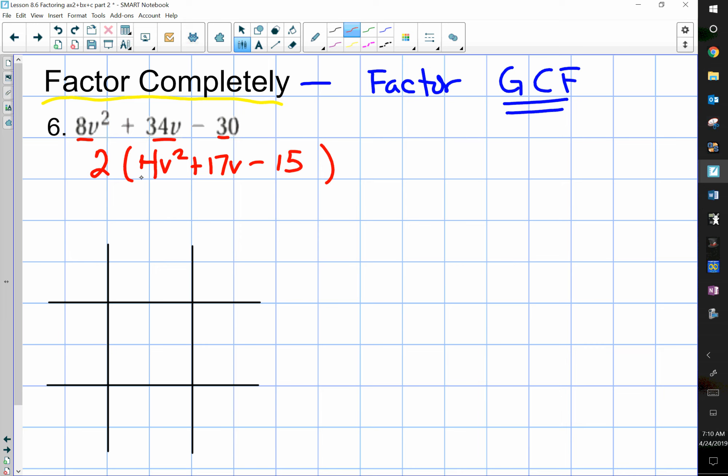And just to be sure that you've done it correctly, you can go back and multiply. 2 times 4 is 8, 2 times 17 is 34, and 2 times 15 is 30. You can also check what's inside the parentheses and make sure there's no other common factor to those three terms. In this case, there is none.